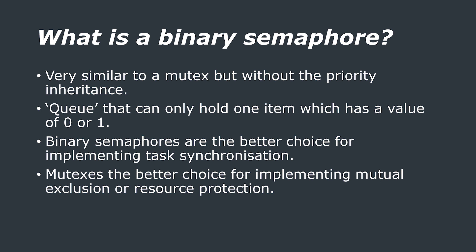Binary semaphores are very similar to mutexes that we covered in the previous video tutorial. Both a mutex and a binary semaphore can have a value of 1 or 0. Think of a binary semaphore as a queue that can only hold one item — it can only be empty or full. Binary semaphores and mutexes differ in that whilst the mutex has a priority inheritance mechanism, the binary semaphore does not.